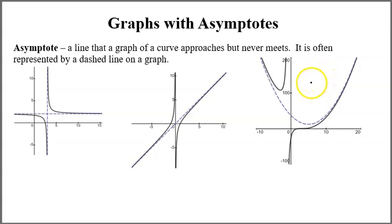In this video we're going to go over asymptotes and graphs. For this course we're going to define an asymptote to be a line that a graph of a curve approaches but never meets. It is often represented by a dashed line on a graph.